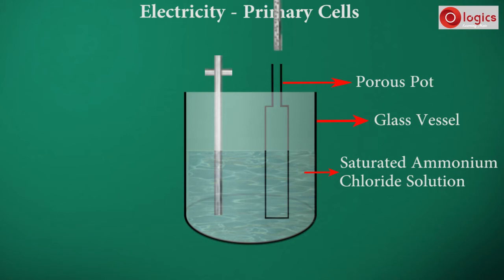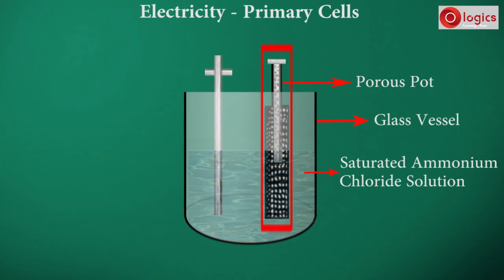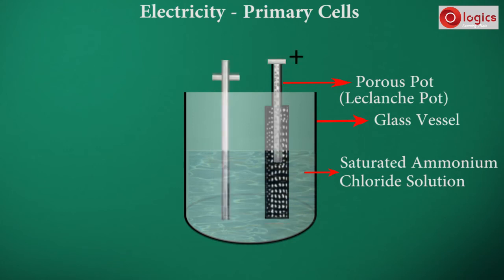This is the porous pot. Place a carbon rod in the middle of the porous pot. The space is tightly filled with a granular mixture of activated charcoal and manganese dioxide. This is called Leclanché pot. Carbon rod acts as a positive pole, and zinc rod acts as a negative pole.